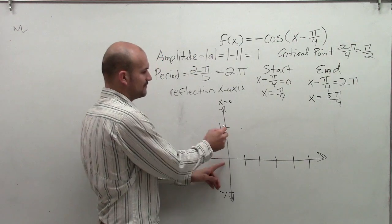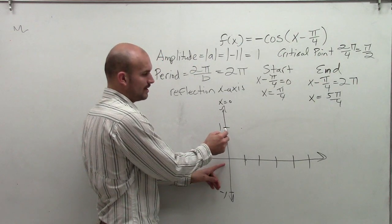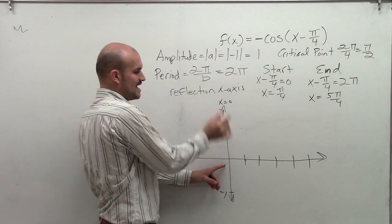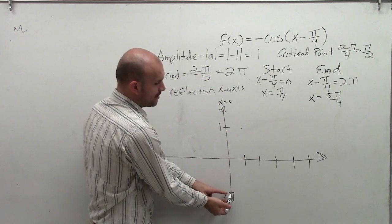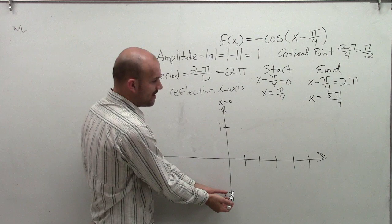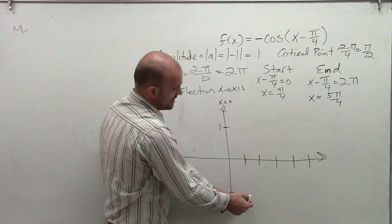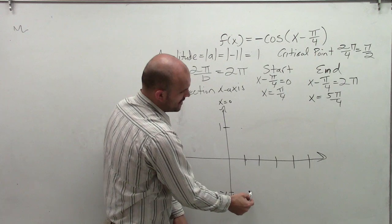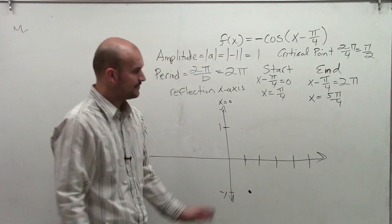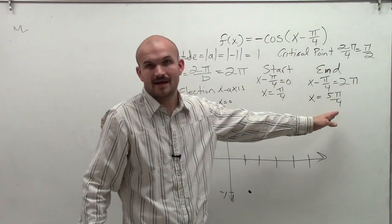Now usually, in the parent graph, we started at 0, 1. Since I'm reflecting over the x-axis, now my initial point, it would be at 0, 1. However, I'm not starting at 0. My now initial point is going to be when x equals pi over 4. So my initial point is going to be right here, and then my end point is going to be at 5 pi over 4.